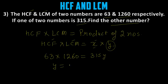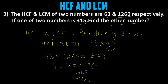In this question HCF is given, LCM is given, and one number X is also given. We can easily find Y by putting in the values: 63 into 1260 equals 315 into Y. So Y equals 63 multiplied by 1260 divided by 315. Solving this gives Y equals 252. That is our answer.